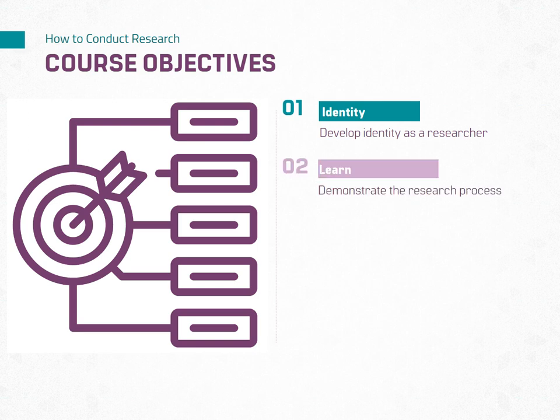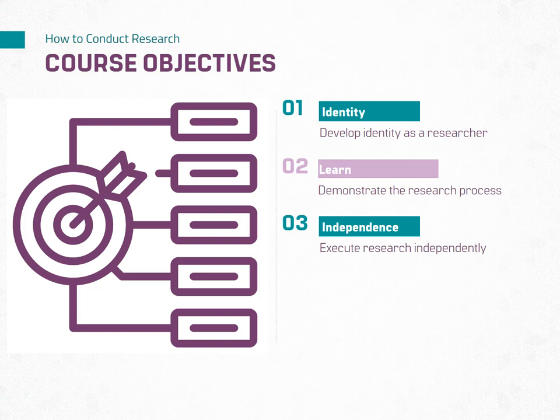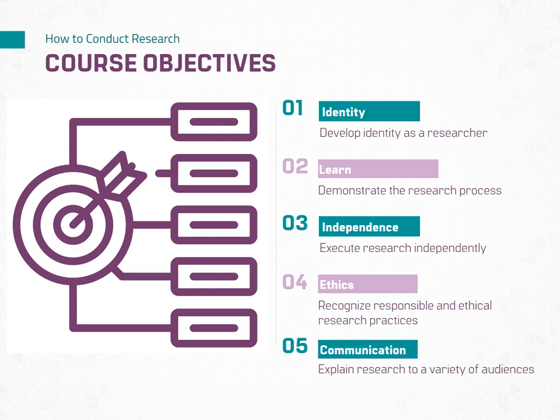2. Understand the research process efficiently and learn how to apply the fundamental concepts of research. 3. Execute research independently. Research is primarily conducted independently even when working as part of a collaborative group. 4. Recognize what are and are not ethical research practices. 5. Explain their research to multiple audiences, including their supervisor, peers, colleagues, research team members, conference attendees, or the general public.